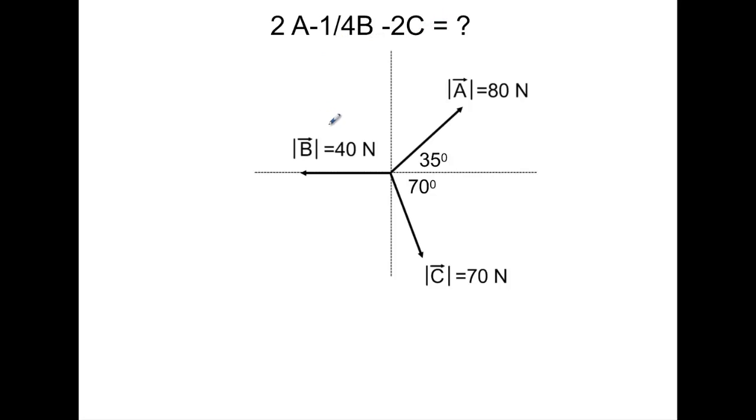So the first thing we're going to do, we're going to work with the A vector. The A vector has a magnitude of 80 newtons, so we need to double this because it says multiply it by 2. So I'm going to move this vector out of the way, or the magnitude out of the way, and extend this to represent 160.